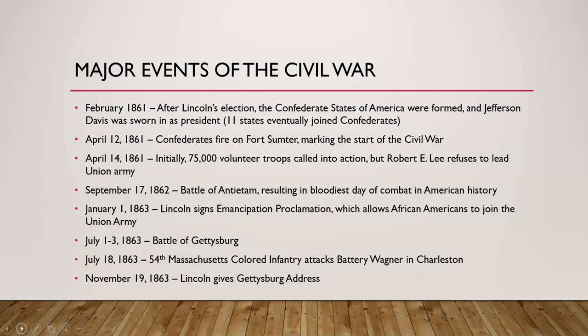Within days, the federal government raised 75,000 volunteer troops. Four additional states — Virginia, Tennessee, Arkansas, and North Carolina — refused to raise an army against their neighbors and joined the Confederacy. However, four slave states — Kentucky, Maryland, Delaware, and Missouri — didn't agree with secession but also didn't agree with pressuring the southern states, so they became border states and tried to remain neutral. We also saw West Virginia separate from Virginia in 1863 and join the Union.